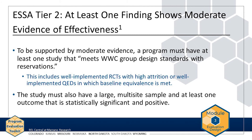To be supported by moderate evidence, a program must have at least one study that meets WWC group design standards with reservations. This rating includes well-implemented RCTs with high attrition, or well-implemented quasi-experimental designs, or QEDs, in which baseline equivalence is met. Baseline equivalence involves reviewing the treatment and comparison groups before implementing a program to ensure that the groups are similar enough to make accurate comparisons. The study must also have a large, multi-site sample, and at least one outcome that is statistically significant and positive.